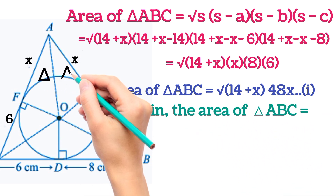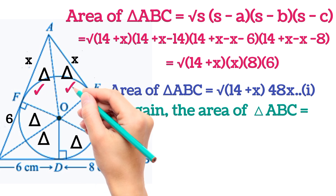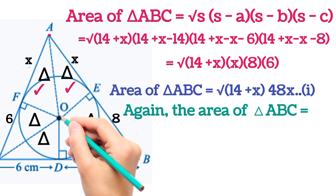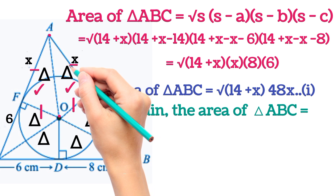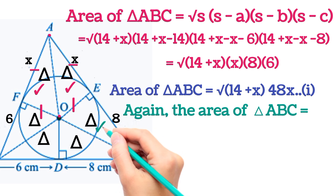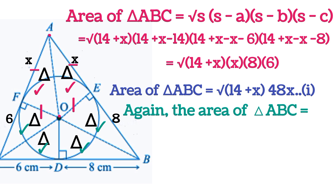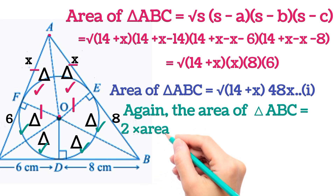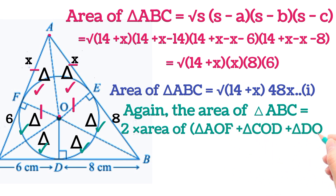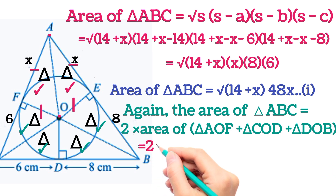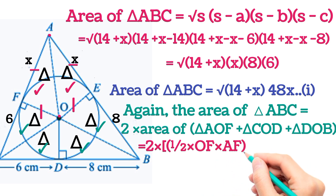The area of triangle ABC can also be written as the sum of smaller triangles: area of AOF, COD, and DOB (each counted twice due to congruent pairs). The pairs are congruent because they share a common side, have equal radii, and equal tangent lengths. So area of triangle ABC = 2 × (area of △AOF + area of △COD + area of △DOB), and each triangle's area = ½ × base × height.